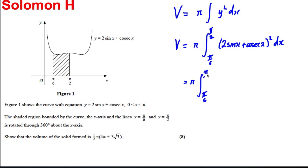Let's expand this thing. The integral between pi by 6 and pi by 2, this would be 4 sine squared x plus 4 sine x cosec x plus cosec squared x, all with respect to x.